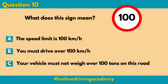Question 10: What does this sign mean? This is a white and red sign, meaning it's your maximum speed limit. So is it A. the speed limit is 100 kilometers an hour, B. you must drive over 100 kilometers an hour, or C. your vehicle must not weigh over 100 tons on this road? The correct answer will be A: the speed limit is 100 kilometers an hour.